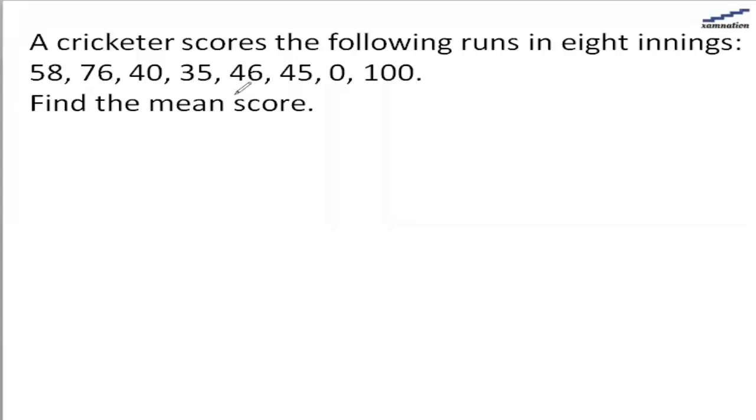From this question, we are told a cricketer scores the following runs in 8 innings. So these are the scores of the cricketer in 8 innings. We need to find out the mean score. The mean score we know—the mean value is the sum of the values divided by total count.